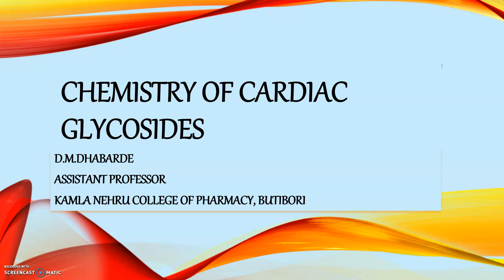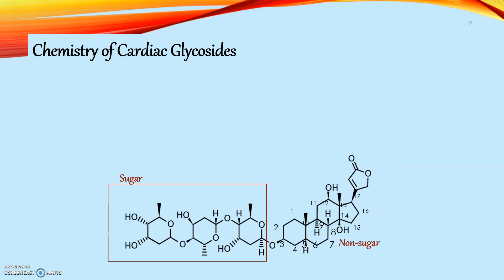Welcome viewers. I am going to present a topic: Chemistry of Cardiac Glycosides. Firstly, what are Cardiac Glycosides? Cardiac Glycosides are naturally occurring drugs which are present in the glycosidic form in a wide variety of plants and in non-glycosidic form in the poison of toads.